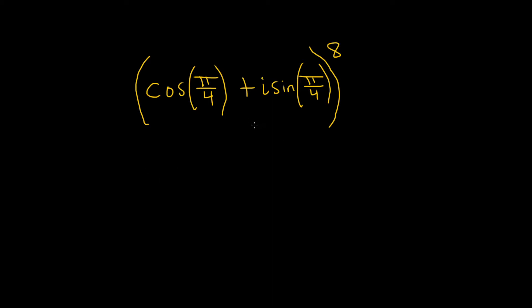In this problem we have a complex number being raised to the eighth power and we have to work this out. There's something called De Moivre's theorem that basically says when you have something like this, what you can do is the following.